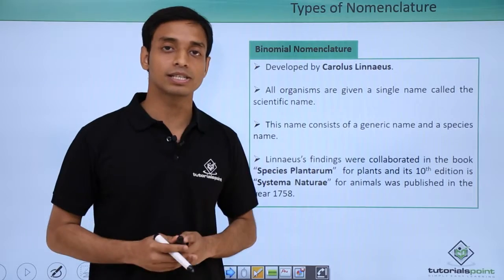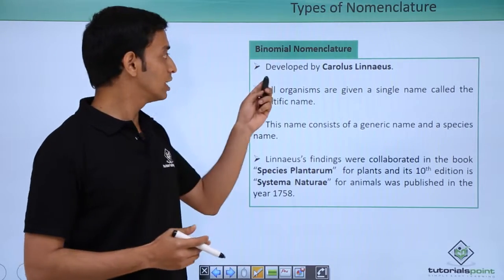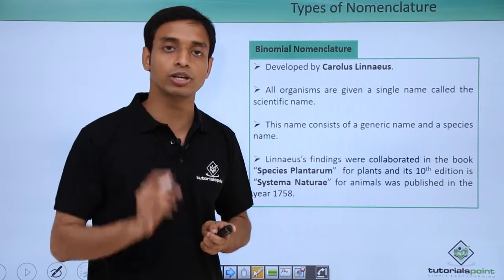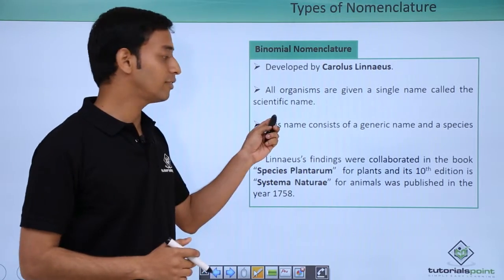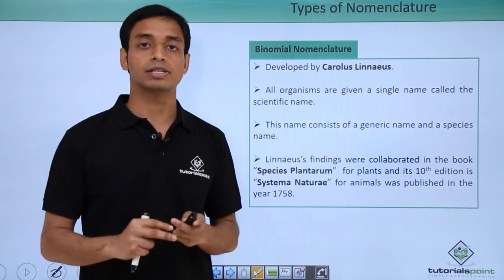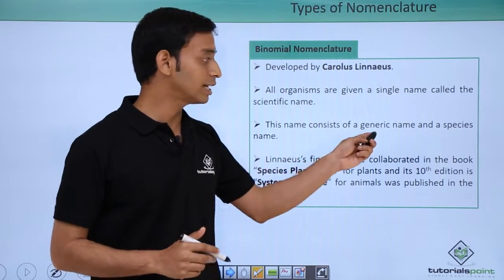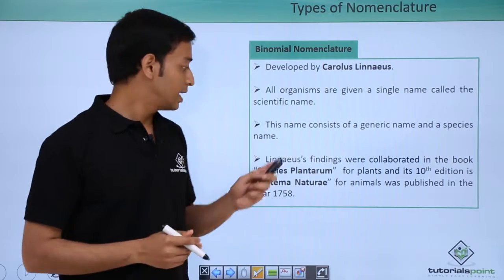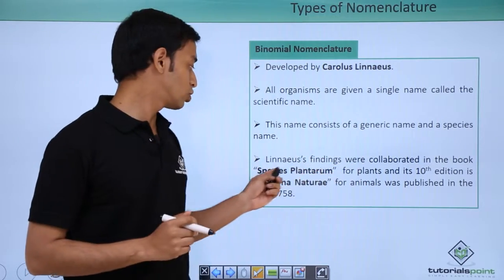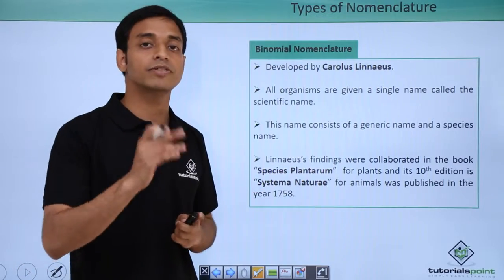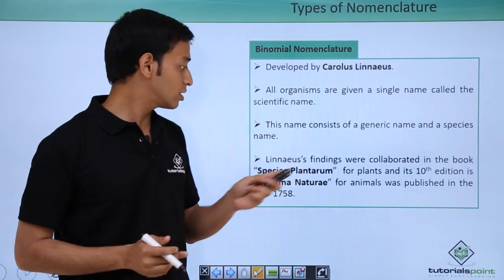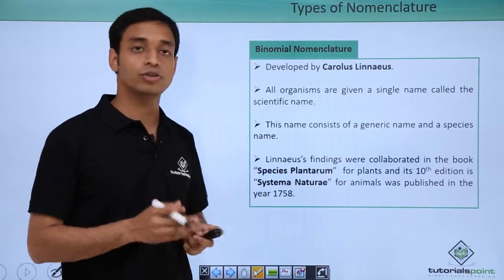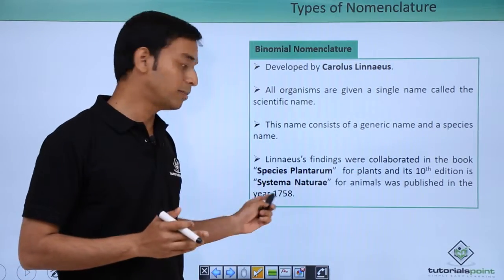To overcome these disadvantages, scientist Carolus Linnaeus devised the binomial system of naming. According to binomial nomenclature, all organisms are given a single scientific name consisting of two components: the first is the genus name and the second is the species name. Linnaeus's findings were published in the book 'Species Plantarum,' specifically for plants, and later in the tenth edition of 'Systema Naturae,' specifically for animals, published in 1758.